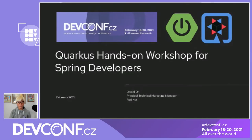My name is Daniel Oh. I've been working for almost six years at Red Hat as a solution architect, technical marketing manager, and a developer advocate.